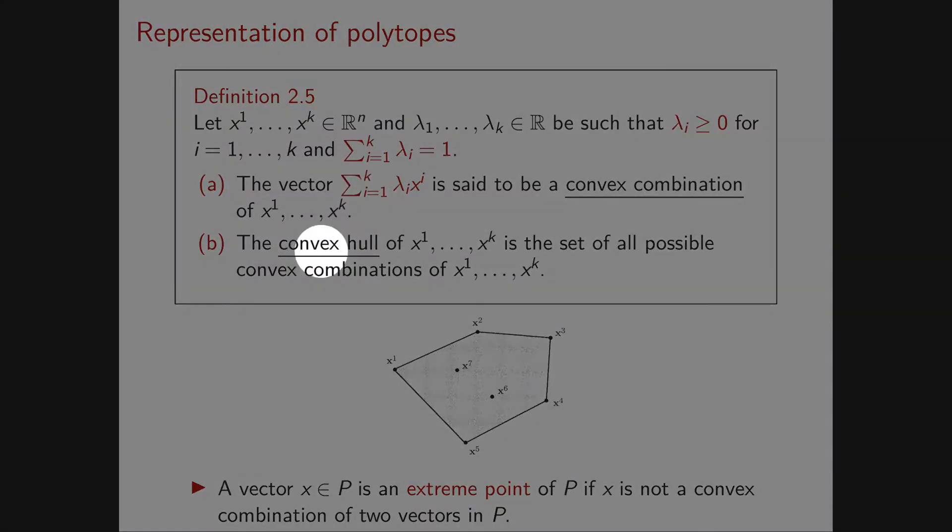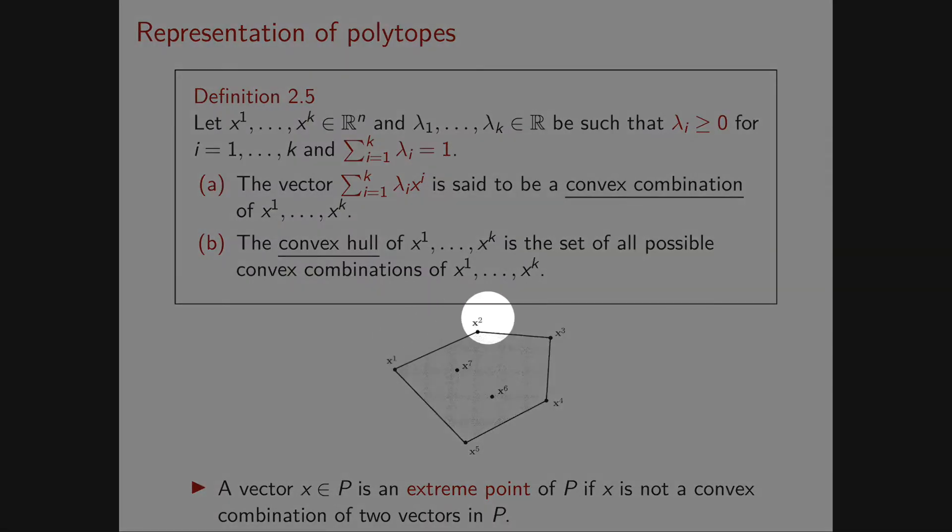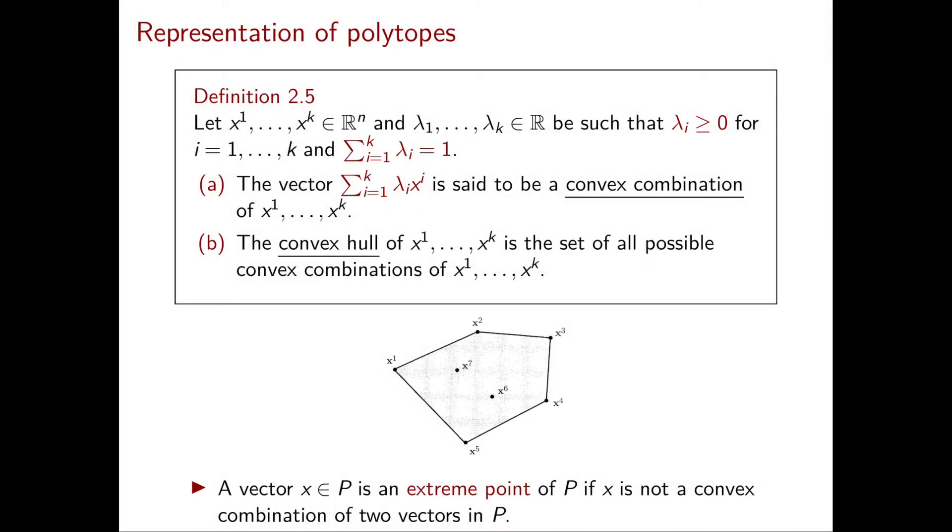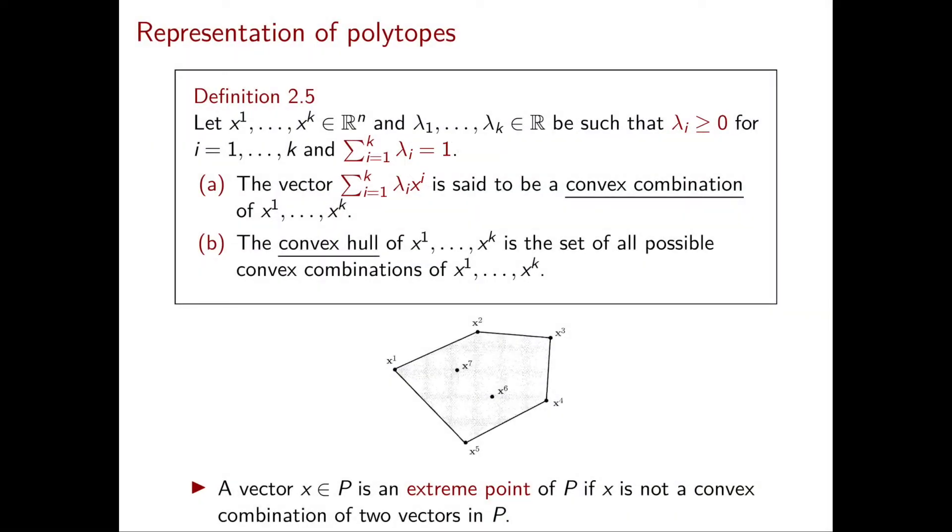Furthermore, the convex hull of x^1 until x^k is the set of all convex combinations of x^1 until x^k. If k equals 2, we only have two vectors, say x^1 and x^2. In this case you will only have λ₁ and λ₂, and since they sum to 1, λ₂ will be exactly equal to 1 minus λ₁.